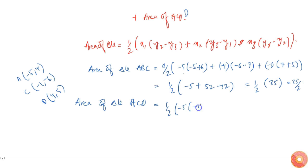minus 6 minus 5 that is minus 11, plus minus 1 into 5 minus 7, plus 4 into 7 minus of minus 6, 13. So finally this whole thing will become half into 55...